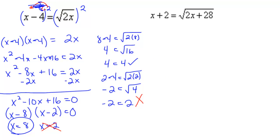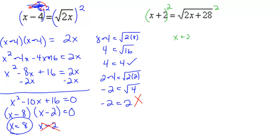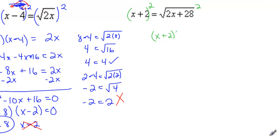I'm going to roll through this last one very quickly. I'm going to square both sides. That gives me x plus 2 times x plus 2 equals 2x plus 28. That's going to give me x squared plus 4x plus 4 — I FOILed.